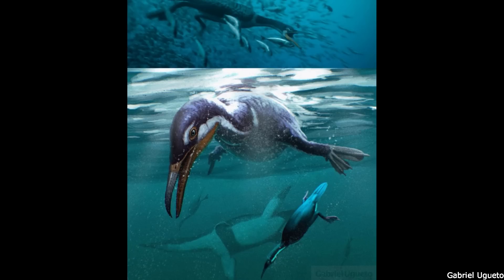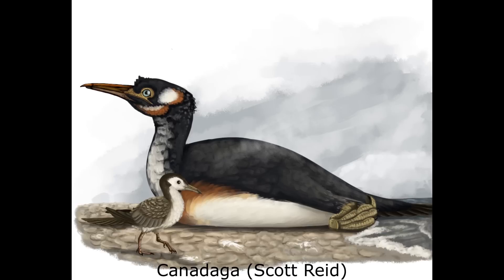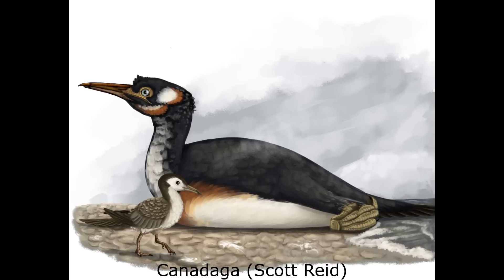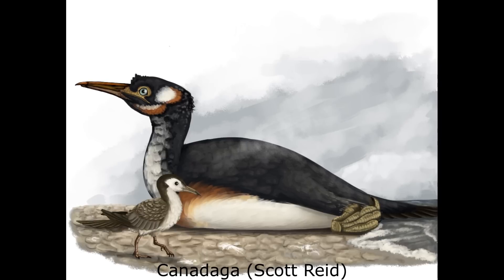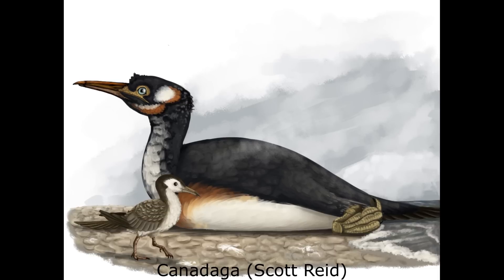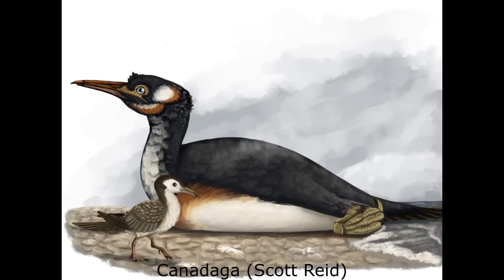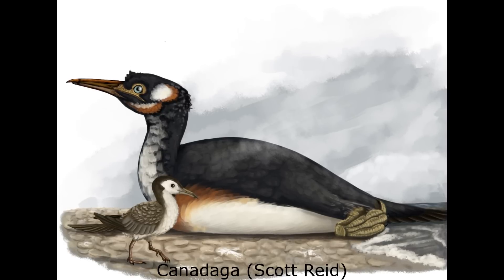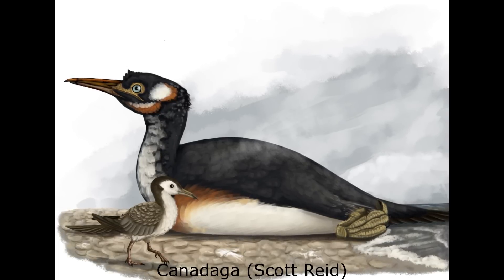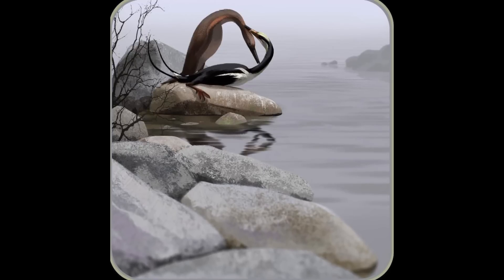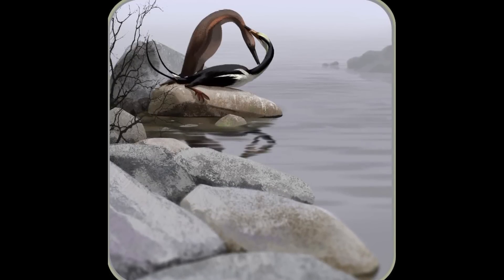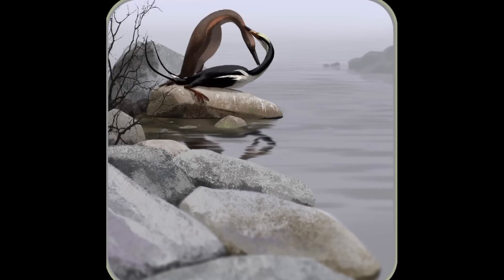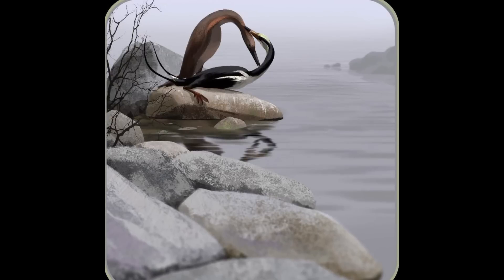Studies of Hesperornis ontogeny have shown that this genus, as well as other members of its group, reached adulthood relatively quickly, similar to modern birds and Ichthyornis. A later genus, Canadaga, was both the largest known Hesperornithine as well as one of the last, living in what is now the northern Canadian territory of Nunavut until about 67 million years ago. Although this region is very cold today, during the late Cretaceous global temperatures were significantly higher, meaning that the north polar region would have been cool temperate rather than freezing. Still, the large size of Canadaga, measuring up to 2.2 metres or 7.2 feet long, may have been an example of Bergmann's rule, where the body size of animals increases in colder environments.